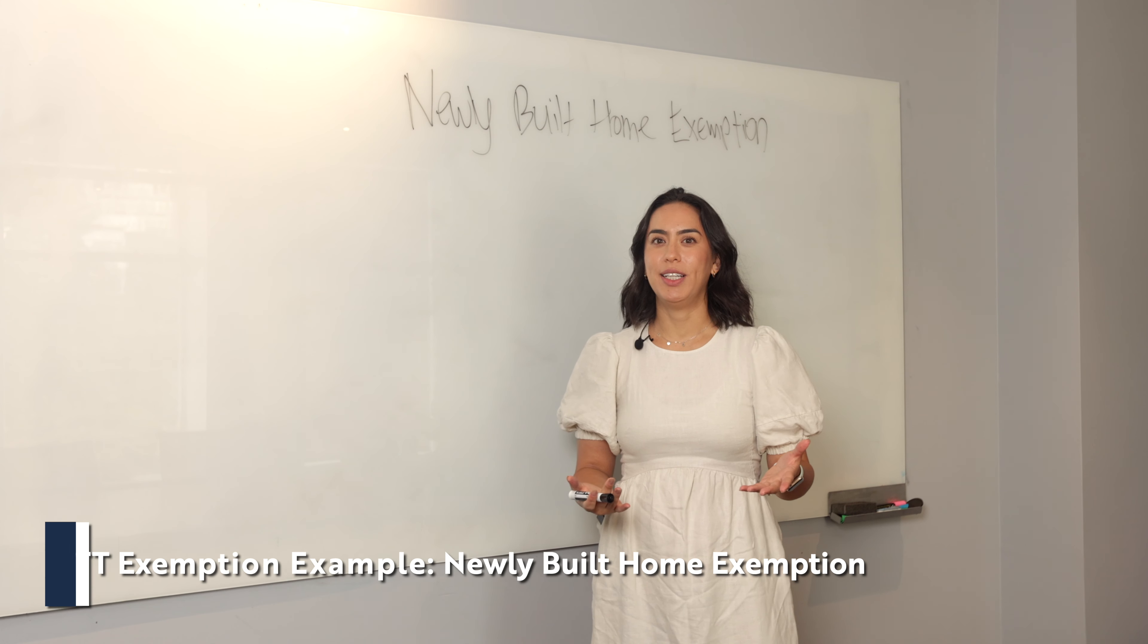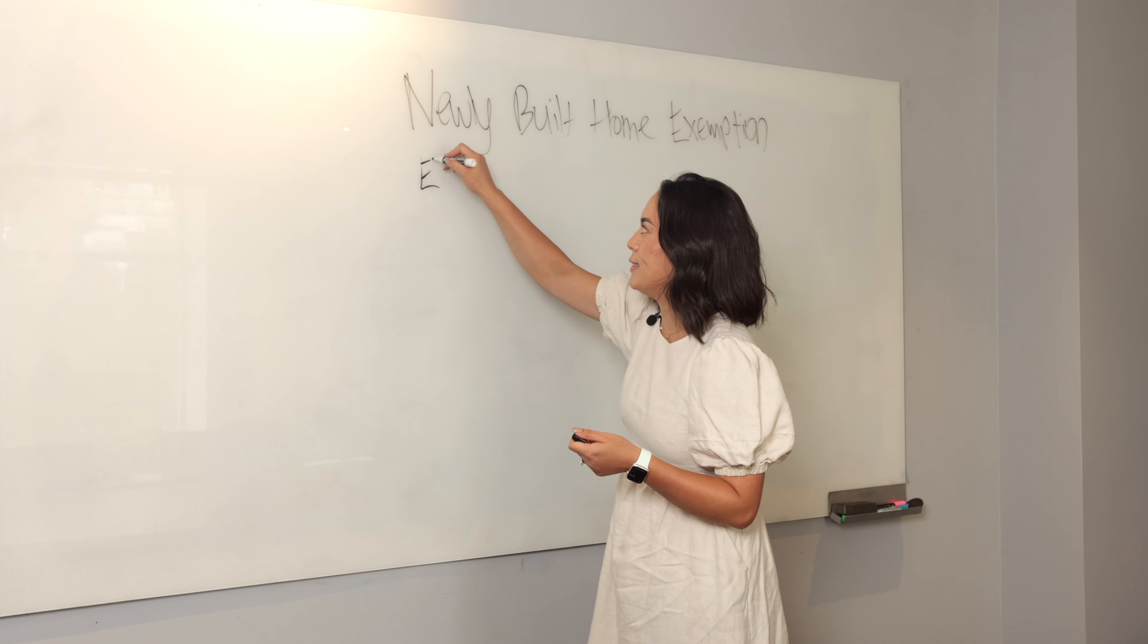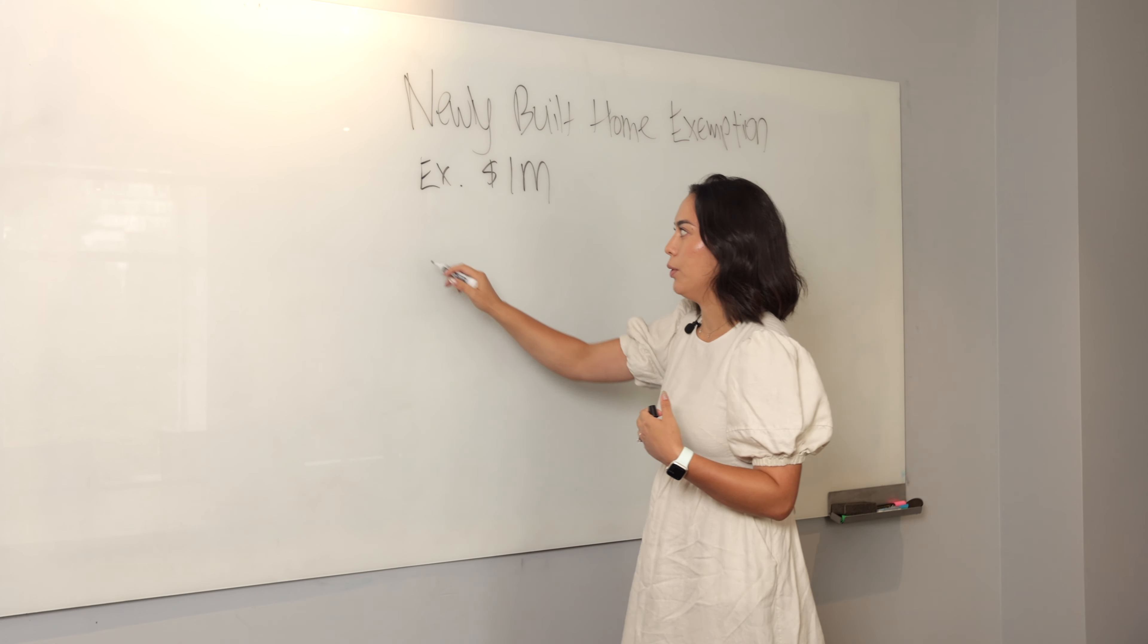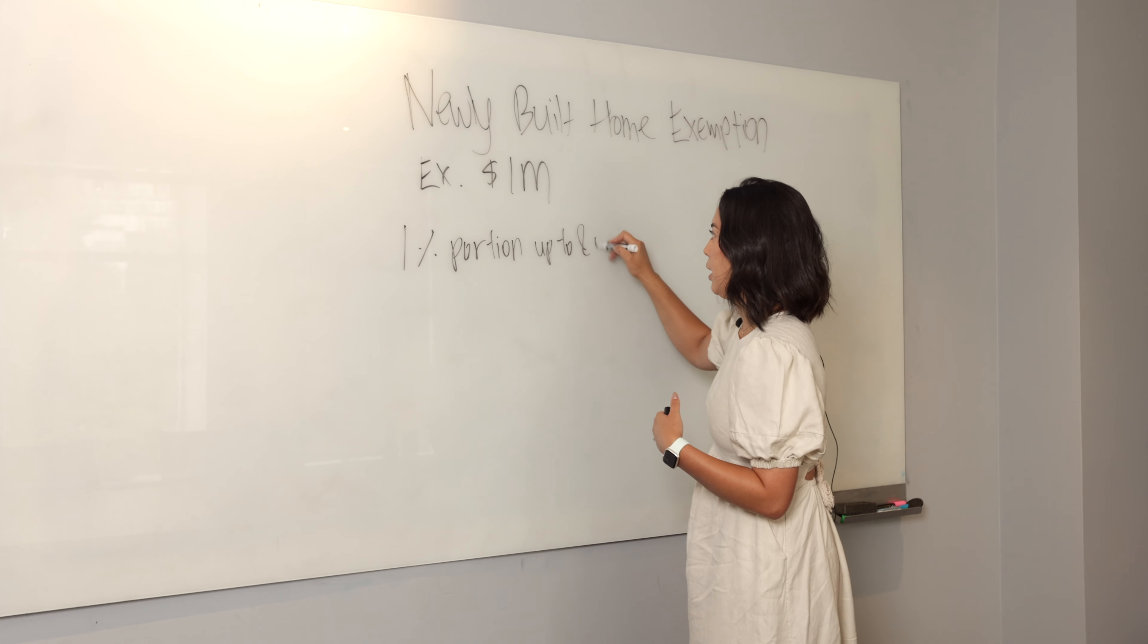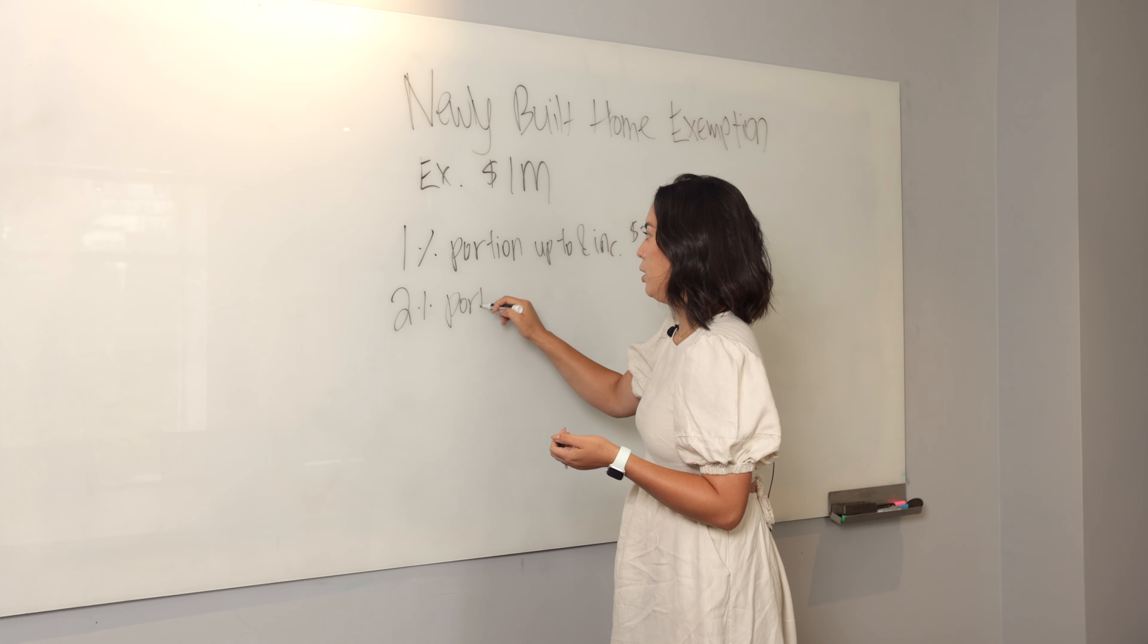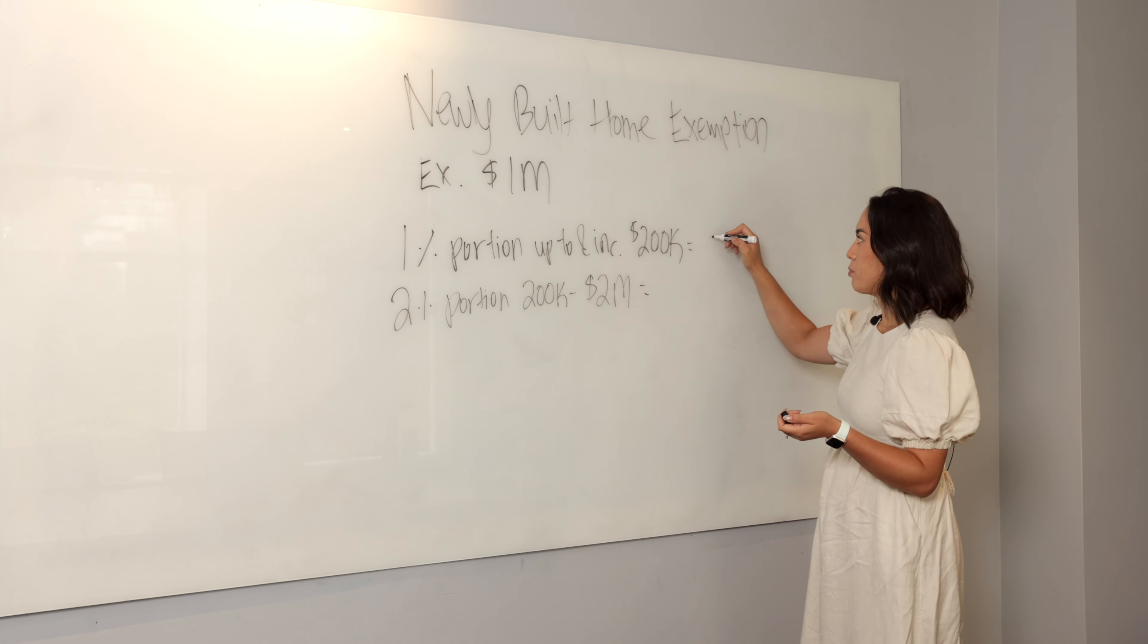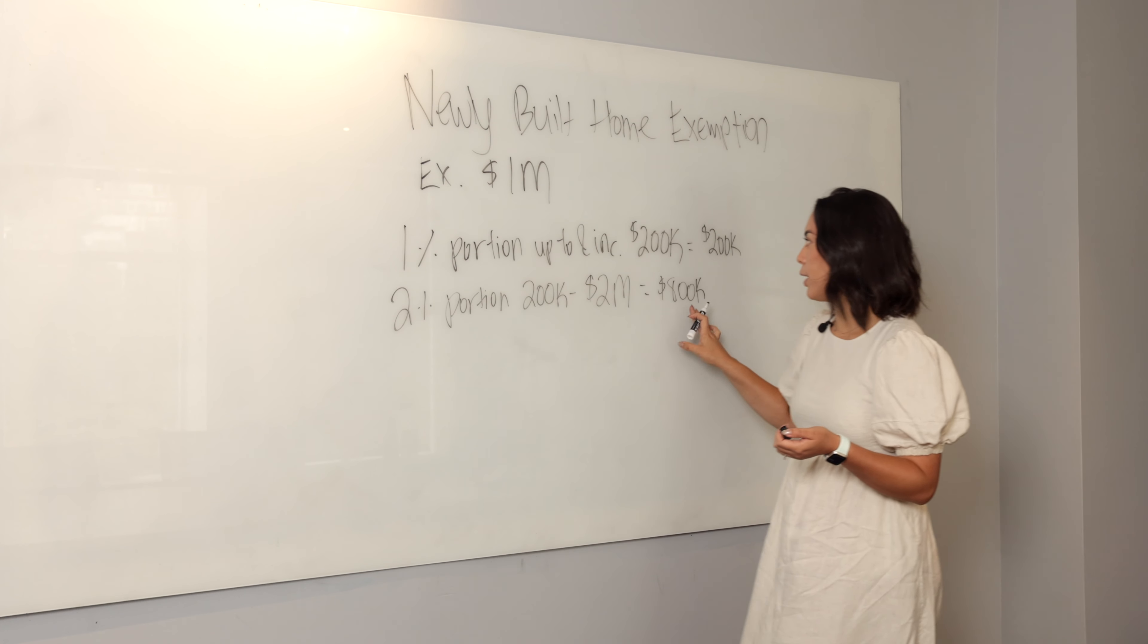Let's do an example calculation. Again, the property in order for it to qualify has to be within that $1.1 million purchase range. So let's use an example of you purchasing a $1 million home. Property transfer tax works on a sliding scale, so we have to break it down. It's 1% on the portion up to and including $200,000. That's the first bracket. Then the next bracket is 2% on the portion between $200,000, above $200,000, and up to including $2 million. So how is that broken down for the $1 million range? You're using a $200,000 portion because that's always the base. $1 million minus the initial $200,000, that means that in this section here subject to the 2%, we're working off an $800,000 number.